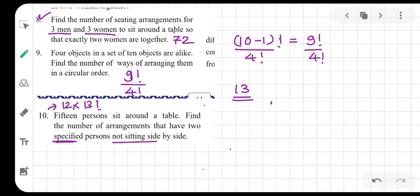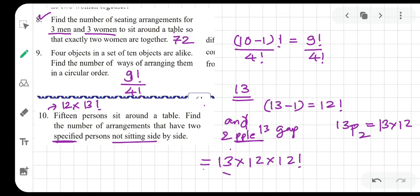First, the two people who should not sit together, leave them aside. So how many people remain? 13. These 13 people sit around a table in 13 minus 1, that is equal to 12 factorial ways. And between 13 people there are 13 gaps. In those 13 gaps, two people can go in how many ways? 13P2. What is 13P2? It is 13 into 12. So now you have 13 into 12 into 12 factorial, which is obviously 12 into 13 factorial. I hope that you are not confused in this chapter.